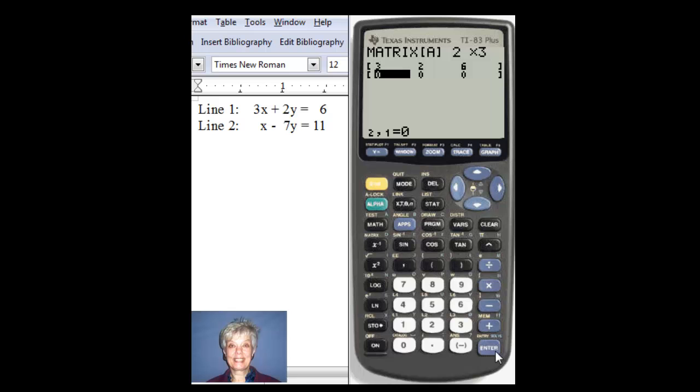Now, I'll use line 2. The first coefficient is a 1 in front of the x. 1, enter. Negative 7, enter. 11, enter.